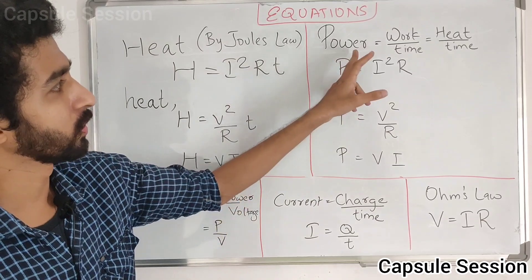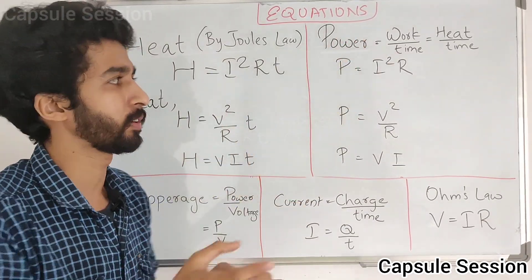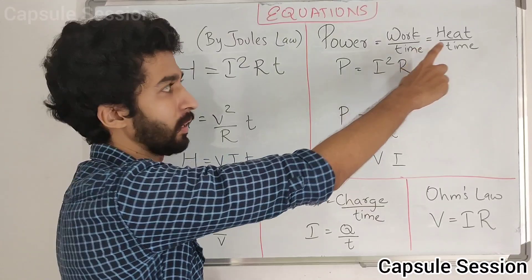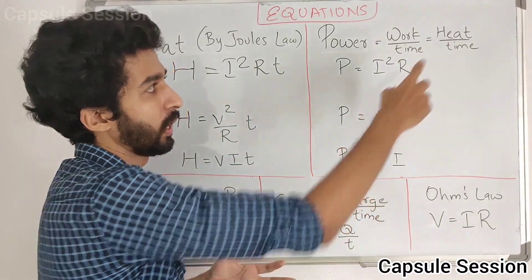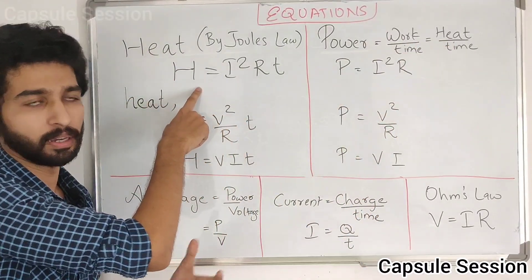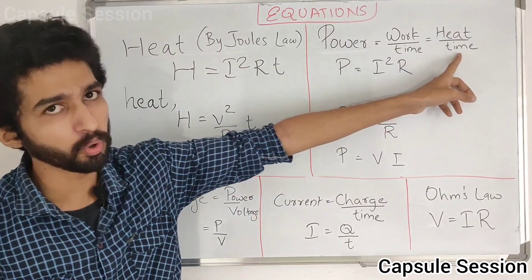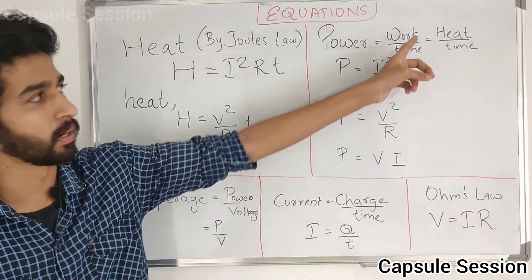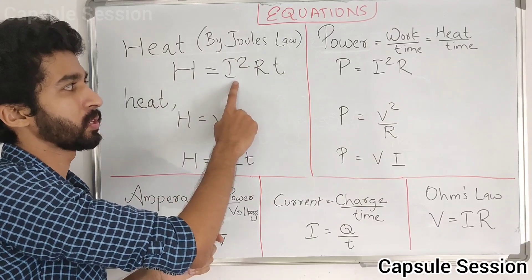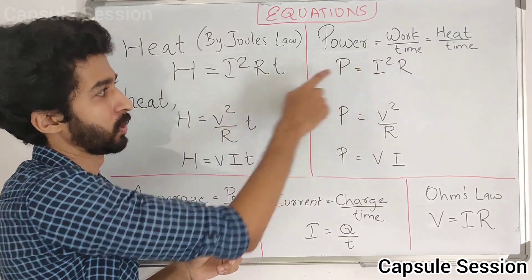We learned about power and equations. We call power by time and heat by time. We already learned the heat equation. If we divide the heat in the equation, it is called the power equation. If we divide heat by time, we can derive the power equation.